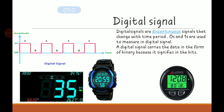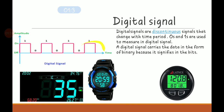Digital signals are discontinuous signals that change with time period. Zeros and ones are used to represent digital signals. A digital signal carries data in the form of binary bits, where zero means off and one means on. You can see the breaking points between values. Digital watches and digital speedometers are examples of digital signals.